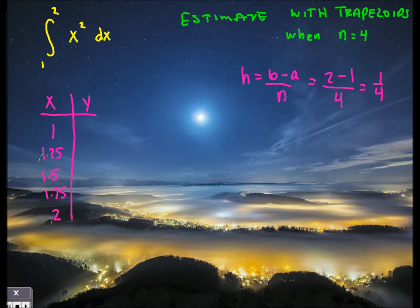The first trapezoid is going to be from 1 to 1.25. The second trapezoid is from 1.25 to 1.5. The third trapezoid is from 1.5 to 1.75. And the last trapezoid, the fourth trapezoid, is from 1.75 to 2. I now need to find the y values. If the function is x squared, I'm going to plug in these x values to get the y values. So 1 squared is 1, 1.25 squared is 1.5625, 1.5 squared is 2.25, 1.75 squared is 3.0625, and 2 squared is 4.